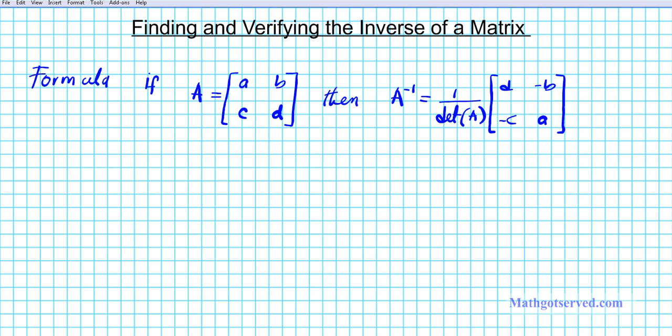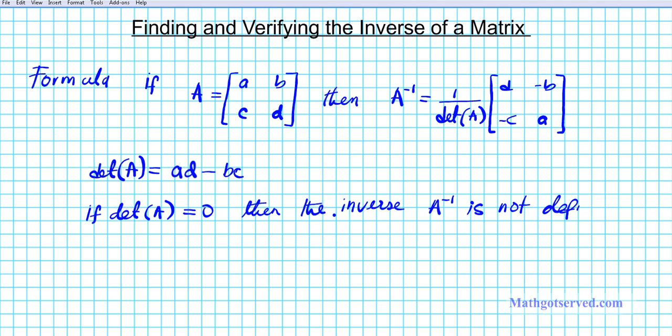Now don't forget that the determinant of matrix A is given by, for a 2 by 2 matrix, it is the product of the diagonal A, D, this is the diagonal right here, minus the product of the wings, B, C. Another thing you want to note, if the determinant of A is equal to 0, then the inverse A to the negative 1 is not defined. So that just basically tells us that the matrix is not invertible if it has a 0 determinant. So if you want to find the inverse of a matrix, the determinant must never be 0.